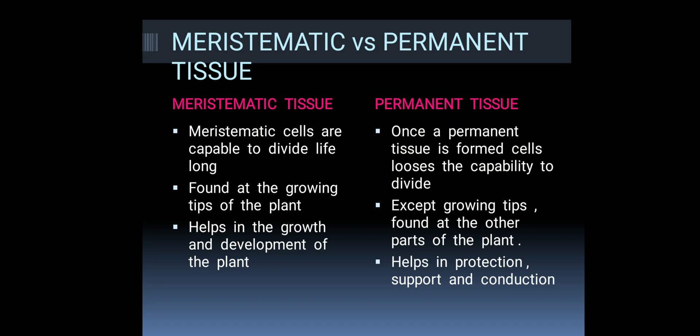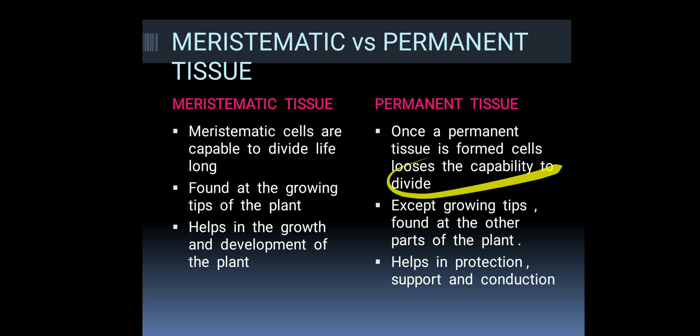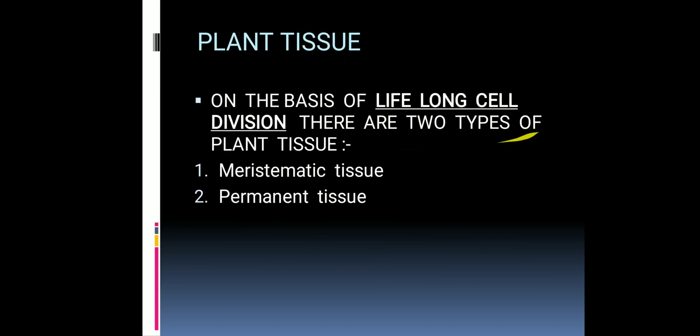Meristematic tissue cells are capable of dividing lifelong, whereas permanent tissue cells lose the capacity to divide once a permanent tissue is formed.